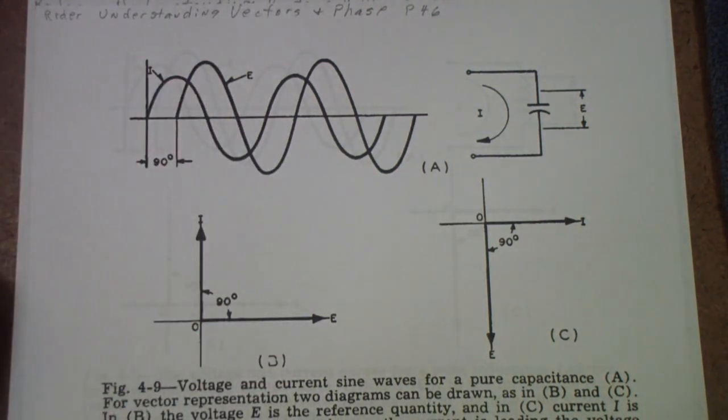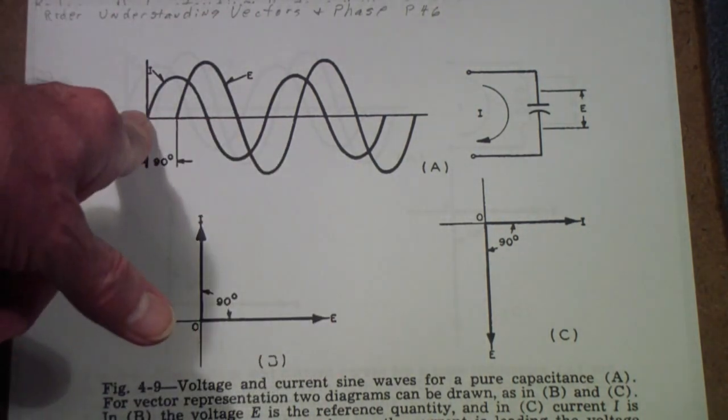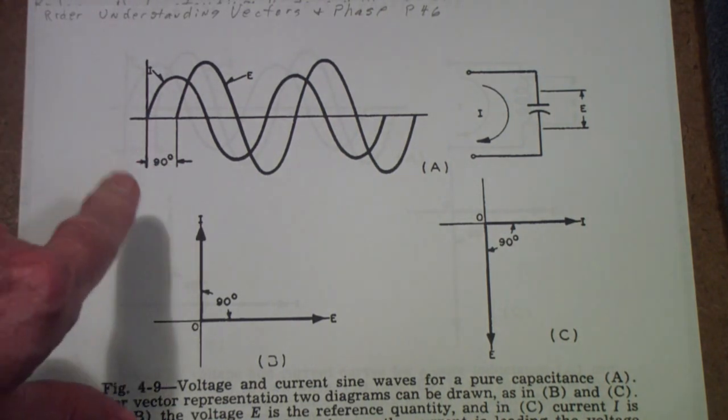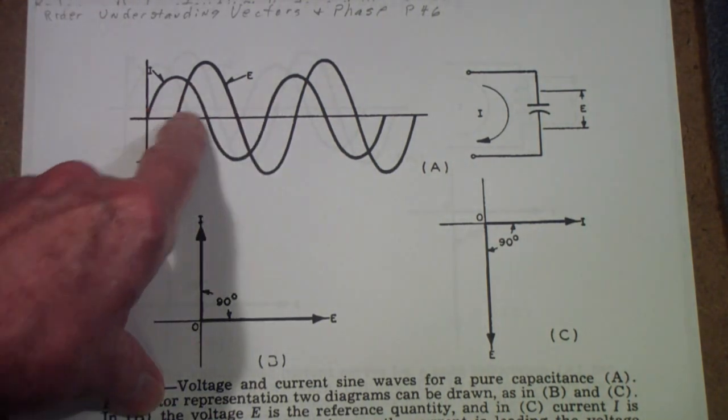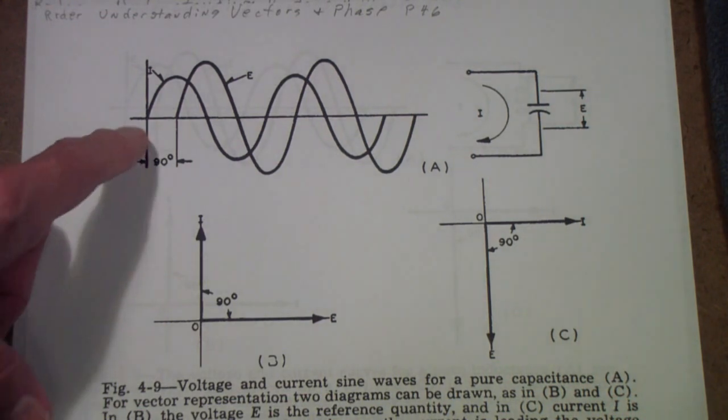So, Eli the Iceman is just a convenient way of remembering how these phase relationships work out for inductors and capacitors. Now, of course, with a resistor, the current and voltage are in phase. So, you don't need a mnemonic for that. They are, the voltage follows the current, and the current follows the voltage. They track together, I guess I should say. There's no phase difference.